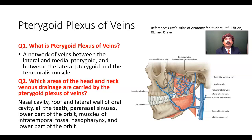What is the pterygoid plexus of veins? The pterygoid plexus of veins is the network of veins between the lateral and medial pterygoid muscle, and between the lateral pterygoid and the temporalis muscle.